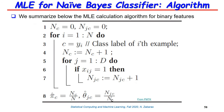The naive Bayes classifier for the binary case is summarized in this simple algorithm from Kevin Murphy's textbook. The probability of being in class c is nc out of N training points, and theta_jc is the number of times feature j is on out of the number of times you are in class c. A very simple algorithm for maximum likelihood estimation in the naive Bayes classifier.